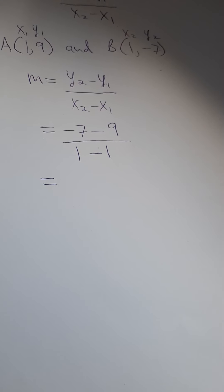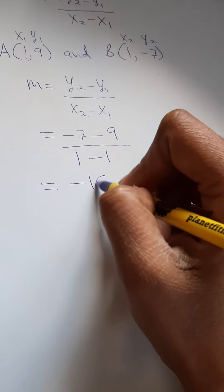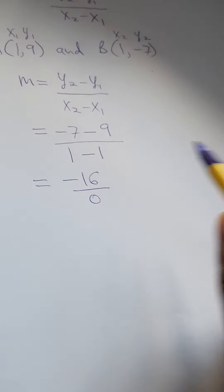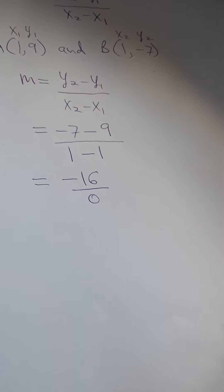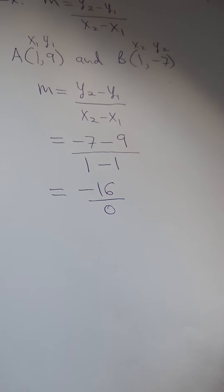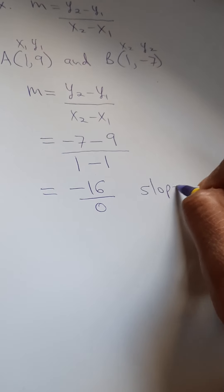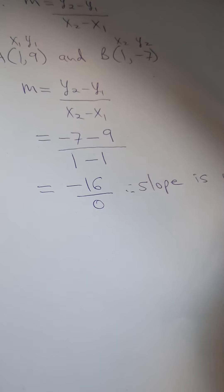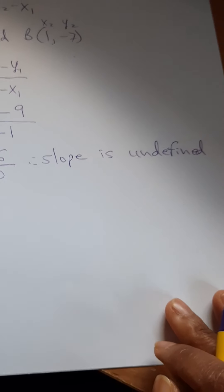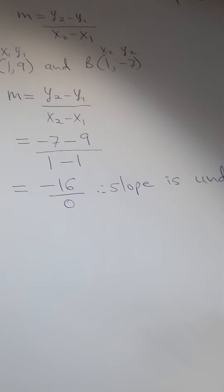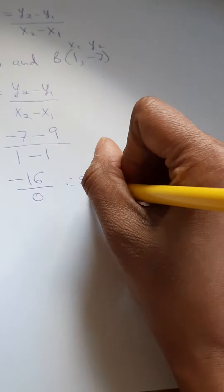This is a good example because the denominator is going to cancel out. We get negative 16 over 0 — doing -7 minus 9 which is -16 on top, and 1 minus 1 which is 0 on the bottom. Anytime the denominator is equal to 0, the slope is undefined. Undefined basically just means that the line is going to be a vertical line.